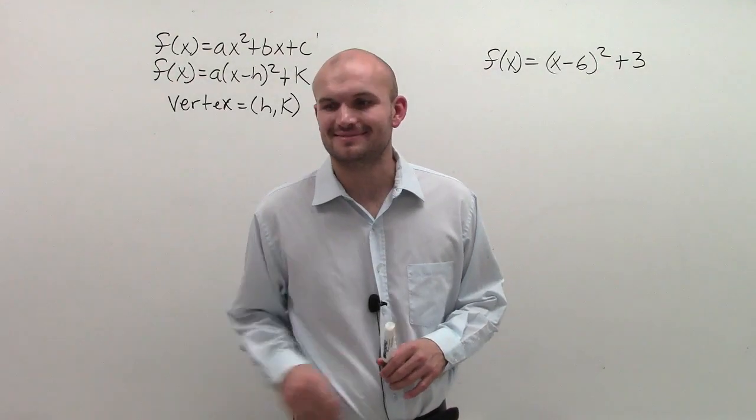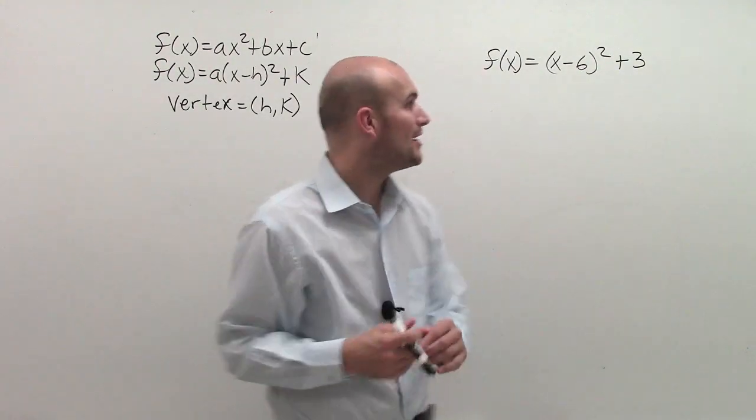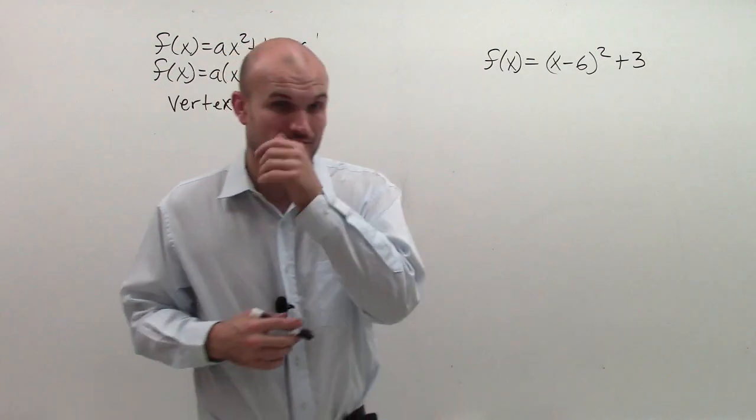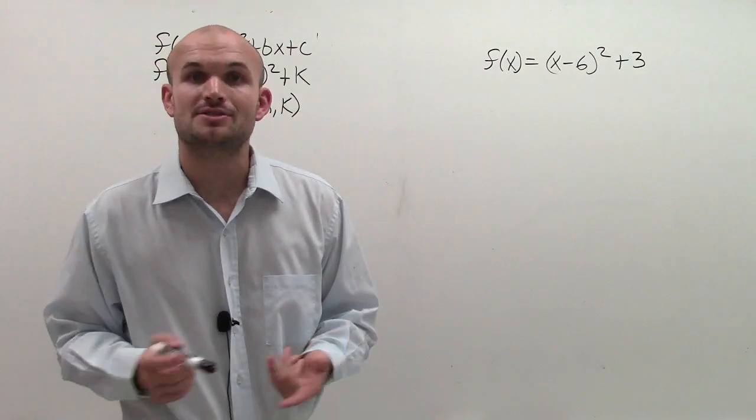All right, so here what we have in this problem is f(x) = (x - 6)² + 3, and what they want us to do is find the vertex and then also find the x-intercepts.